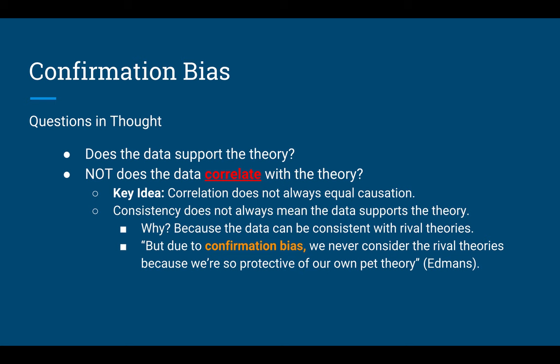As Edmonds says, due to confirmation bias we never consider the rival theories because we're so protective of our own. We're so eager to be right that we're only looking at the evidence that supports what we believe. We're so eager to prove someone wrong, or find evidence that we are correct, that we don't look at other people's opinions or the entire well-rounded argument.